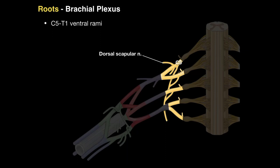There is the C6 root and the C7 root of the brachial plexus. Notice that coming off the C5, C6, and C7 roots, a nerve is formed called the long thoracic nerve, which innervates the serratus anterior muscle.